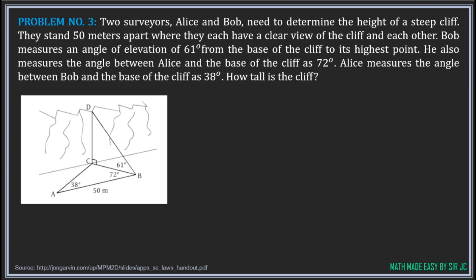Let's have the last problem. Two surveyors, Alice and Bob, need to determine the height of a steep cliff. They stand 50 meters apart where they each have a clear view of the cliff and each other. Bob measures an angle of elevation of 61 degrees from the base of the cliff to its highest point. He also measures the angle between Alice and the base of the cliff as 72 degrees. Alice measures the angle between Bob and the base of the cliff as 38 degrees. How tall is the cliff?